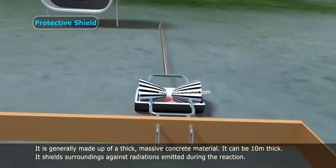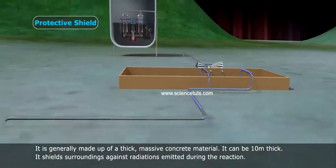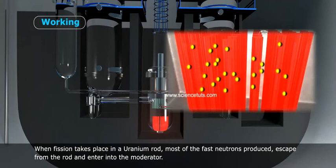Working: When fission takes place in a uranium rod, most of the fast neutrons produced escape from the rod and enter into the moderator.